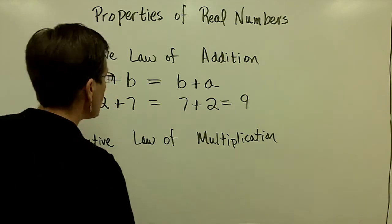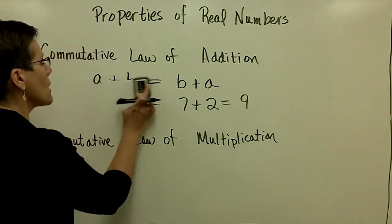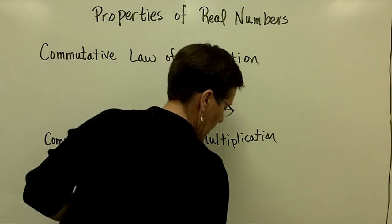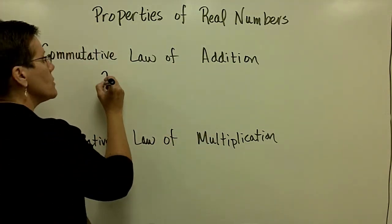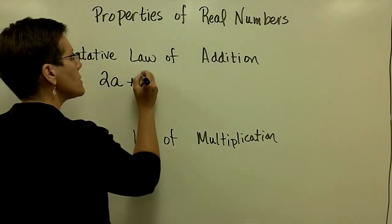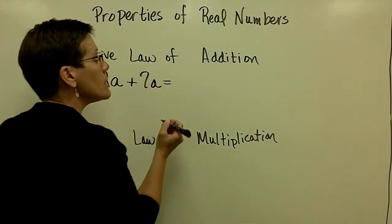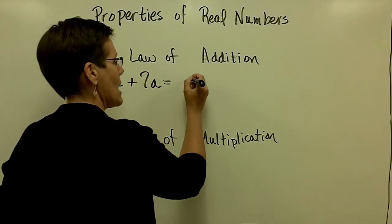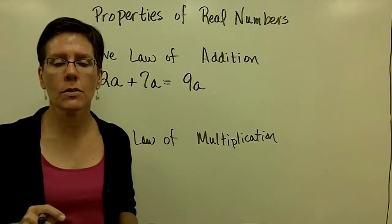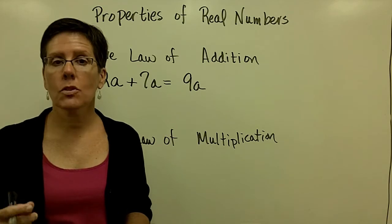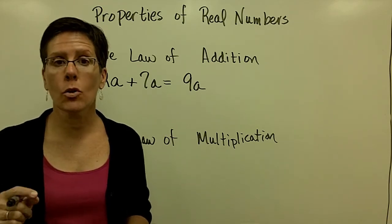One of the ways that we're going to use this as we go along is that we're going to combine or simplify an algebraic expression by adding like terms. For example, 2A plus 7A is equal to 9A. What I do is I add their coefficients of those like terms.